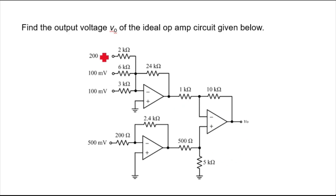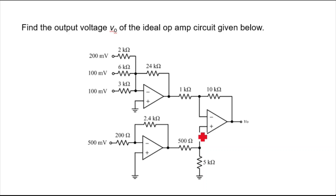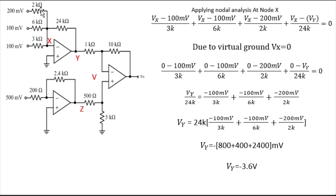The question asks us to find the output voltage V_naught of the ideal op-amp circuit given below. You can see there are three op-amps connected. This first one is a summing amplifier — if you know the formula you can directly get the value at that point. The second is a non-inverting configuration. Here, due to virtual ground, the two terminals have the same potential, so we can write the equation and easily get the output V_naught.